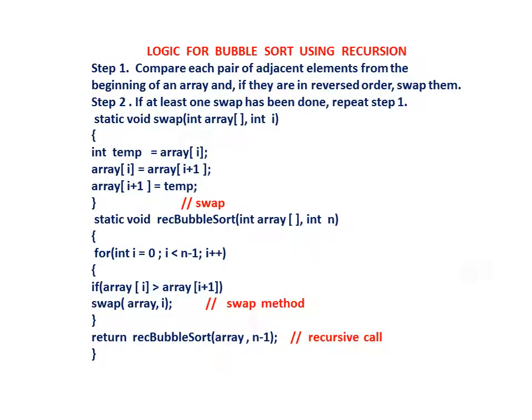Logic for bubble sort using recursion. Step 1: Compare each pair of adjacent elements from the beginning of an array, and if they are in reversed order, swap them. Step 2: If at least one swap has been done, repeat step 1.